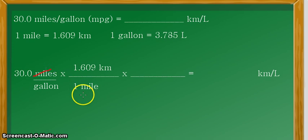Here, we cancel the unit miles. So, we are now left with only the units in kilometer and in gallon. But to go back, we are asked to look for the value in the unit of kilometers per liter. So, we still need to convert gallons into liter.